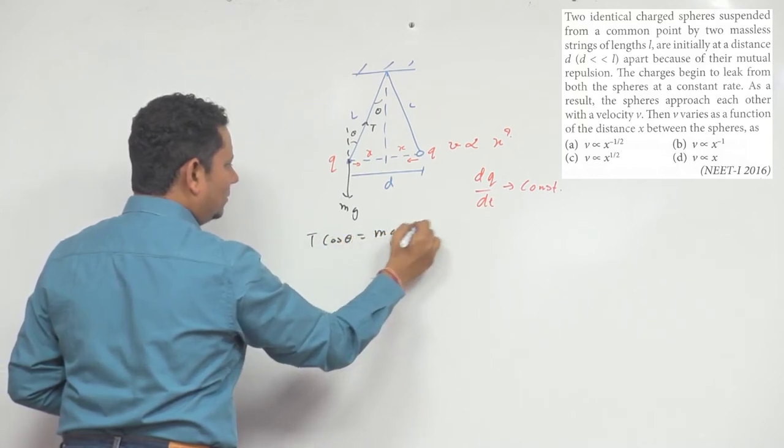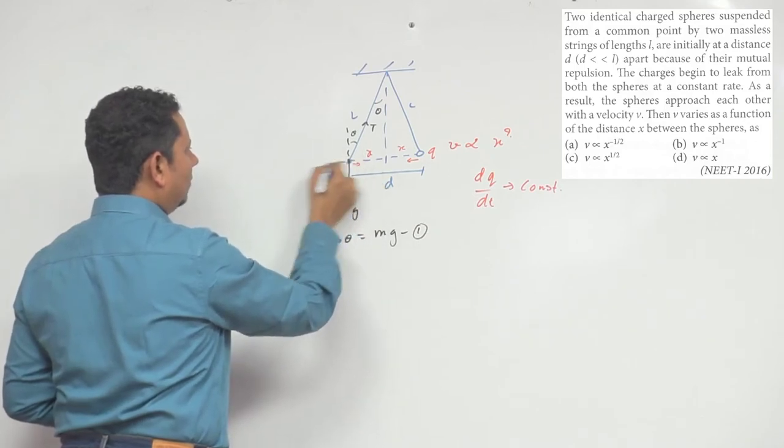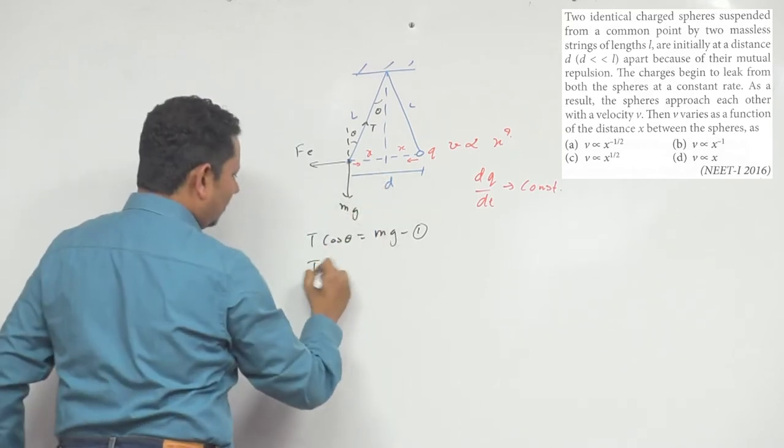The second equation: between them the electrostatic force of repulsion - here your F_e will remain, and that F_e will be equal to T sin theta, will be equal to F_e.